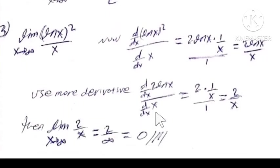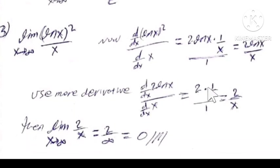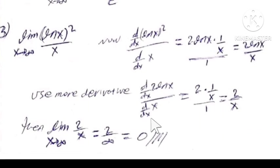But this is also undetermined, therefore we use a second derivative. The derivative of 2·ln(x): 2 is a constant, and the derivative of ln(x) is simply 1 over x, so we get 2 times 1 over x, which equals 2 over x. The derivative of x is 1. Now substitute: the limit of 2 over x as x approaches infinity means 2 over infinity, which equals 0.